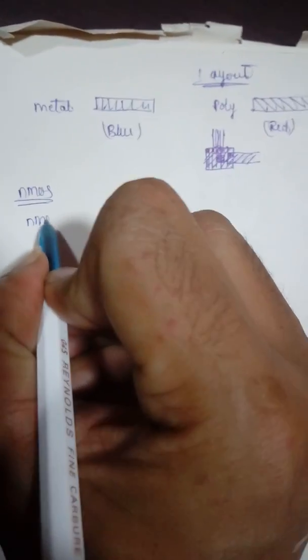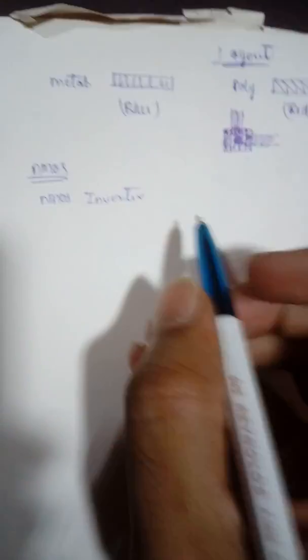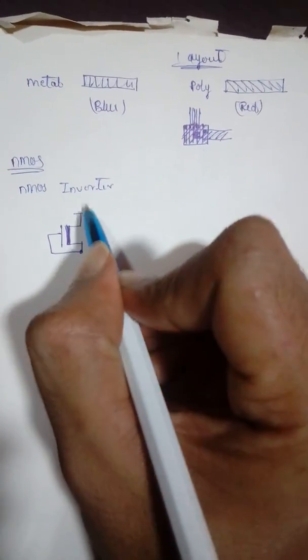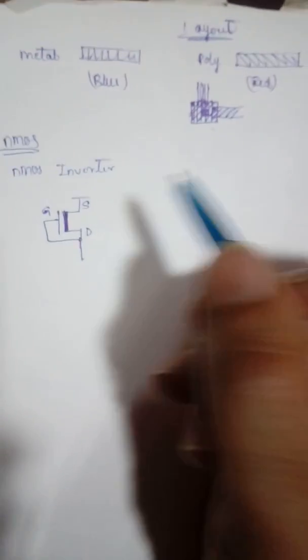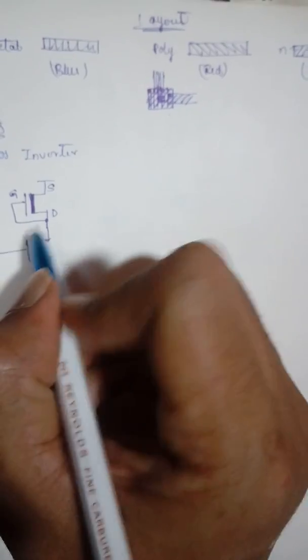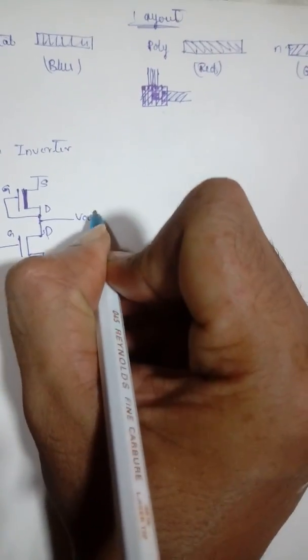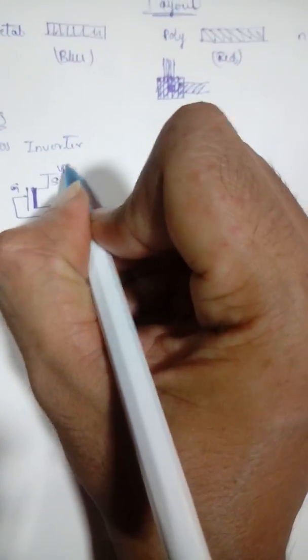Now we'll go to the NMOS inverter. The pull-up region is a depletion mode transistor with its source pulled towards VDD and the drain at the opposite terminal. The gate and drain are always shorted in the NMOS inverter. The pull-down is an enhancement mode transistor where you give input to the gate and take output at the junction of the two drain terminals. VDD is at the top and ground is at the bottom.